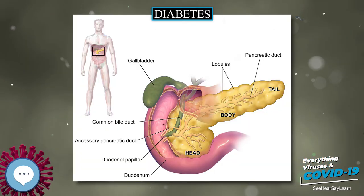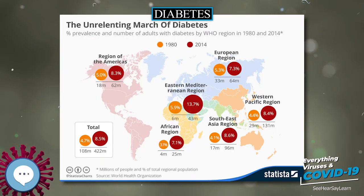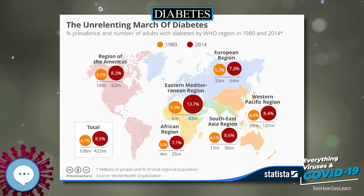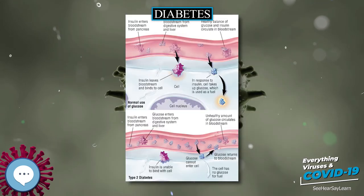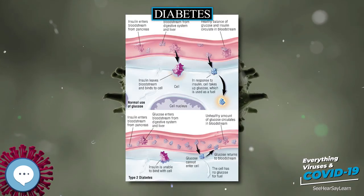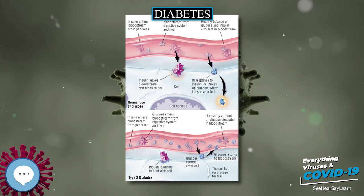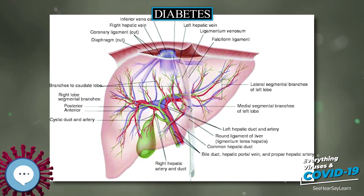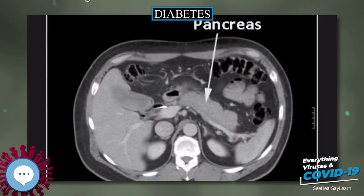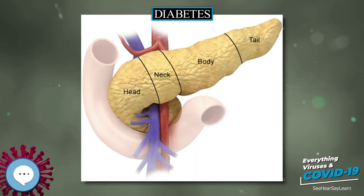If the amount of insulin available is insufficient, or if cells respond poorly to the effects of insulin (insulin resistance), or if the insulin itself is defective, then glucose is not absorbed properly by the body cells that require it, and is not stored appropriately in the liver and muscles. The net effect is persistently high levels of blood glucose, poor protein synthesis, and other metabolic derangements, such as metabolic acidosis in cases of complete insulin deficiency.